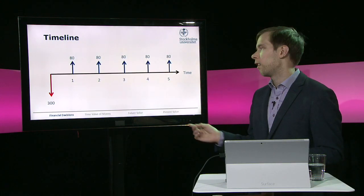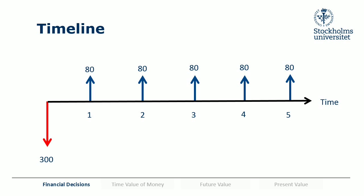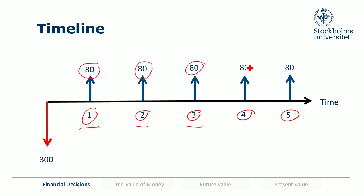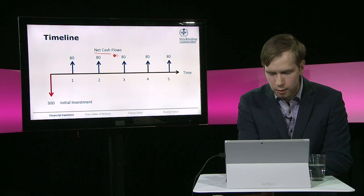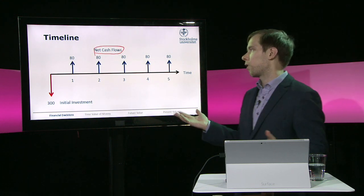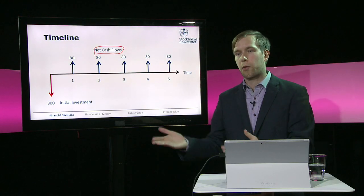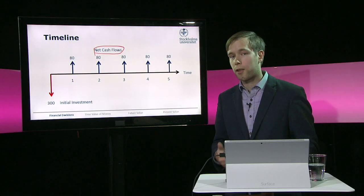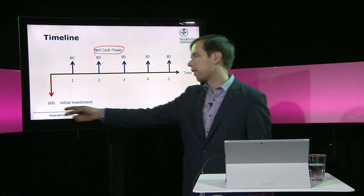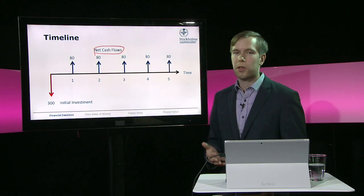We have a timeline which represents time — periods one, two, three, four, etc., representing years or months into the future. We have cash flows: an arrow going up means a positive cash flow, an arrow going down means a negative cash flow. In this case it's a negative cash flow of 300. We always talk about net cash flows — each year we take cash flows in and cash flows out, net them, and look at how much money we actually received. The investment at the beginning is called the initial investment.